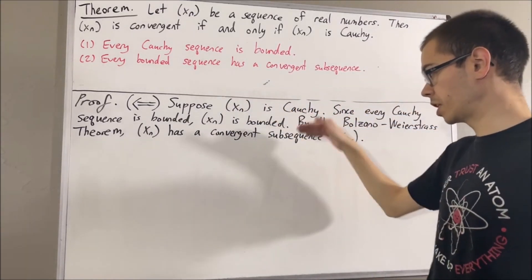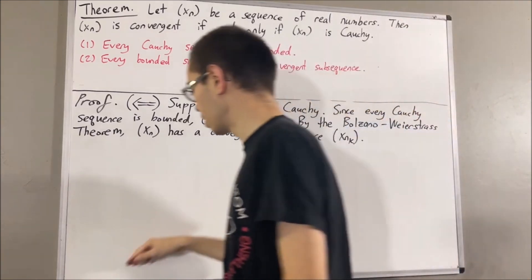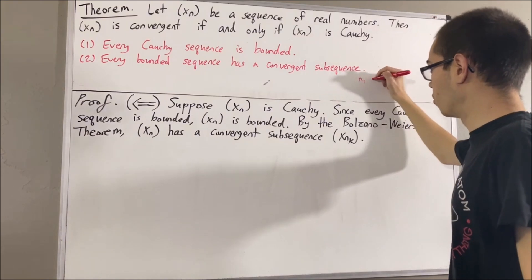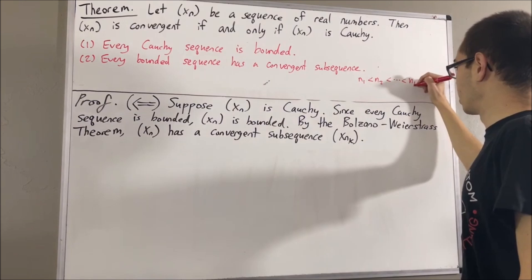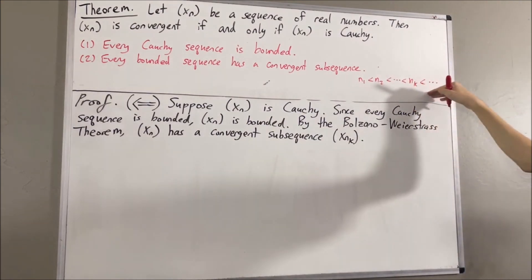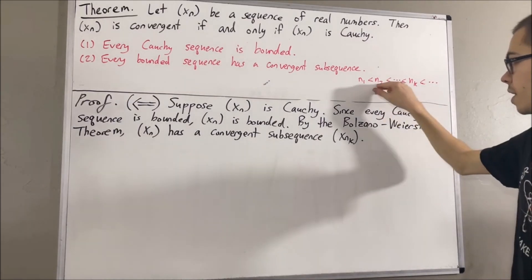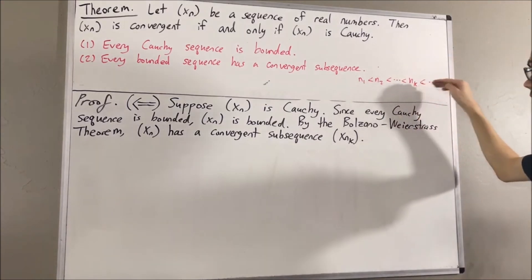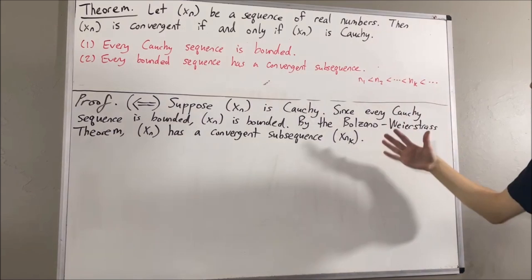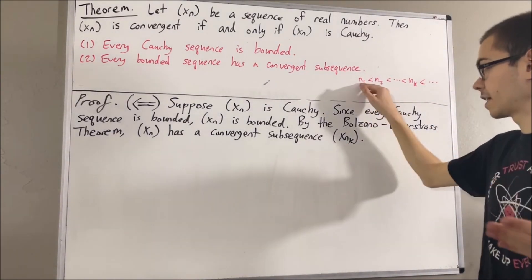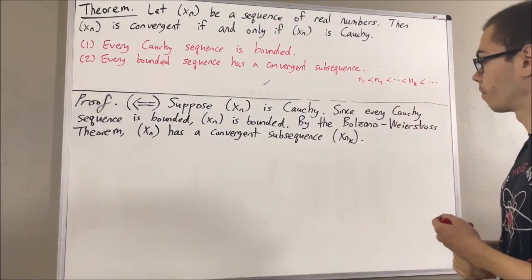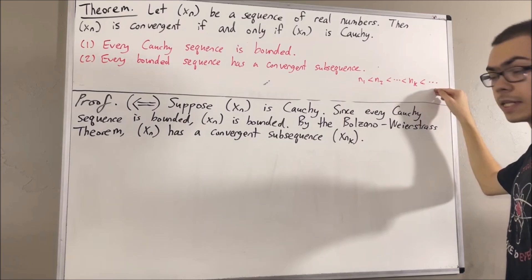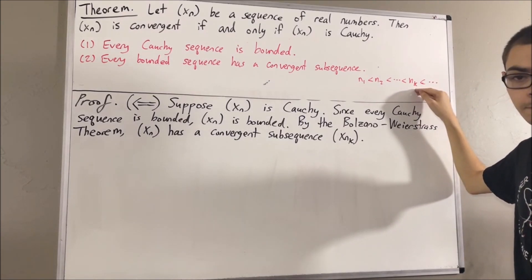I'm going to call the convergent subsequence xnk. Let's remind ourselves how subsequences work. Basically, we have a strictly increasing sequence of positive integers: n1 is less than n2, and so on, less than nk, and so on. A property of strictly increasing sequences of positive integers like this is that n sub k is greater than or equal to k for every positive integer k. We're going to use this fact in our proof.